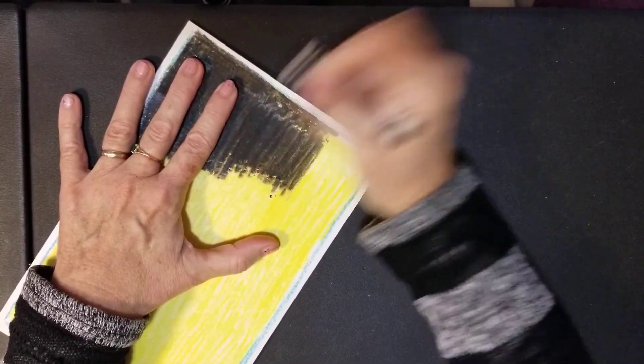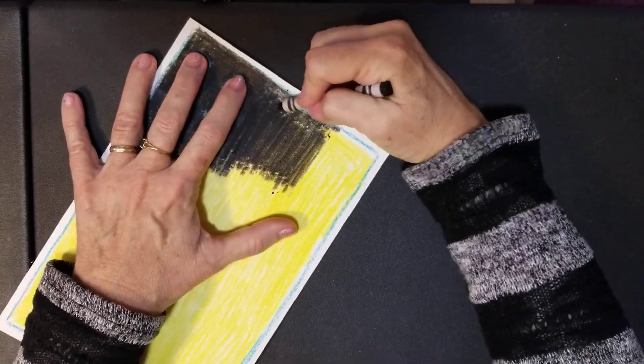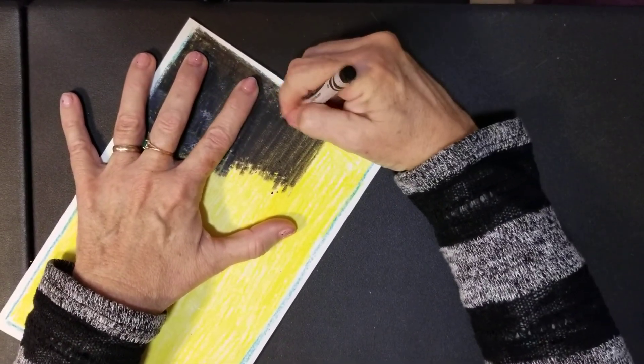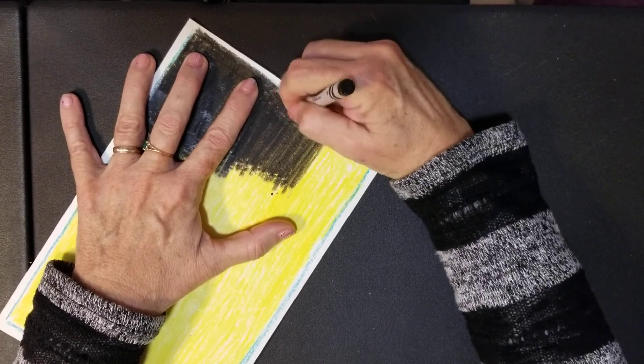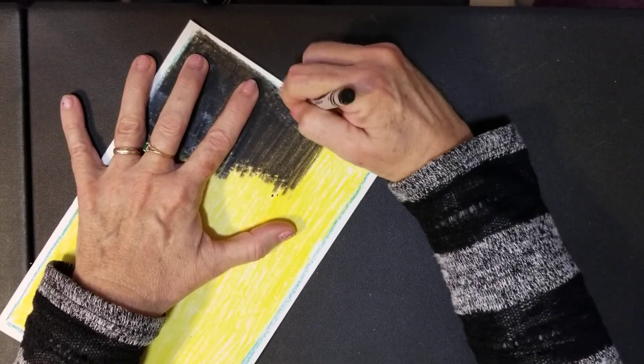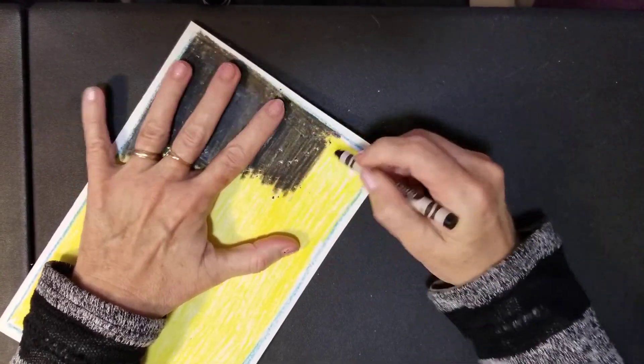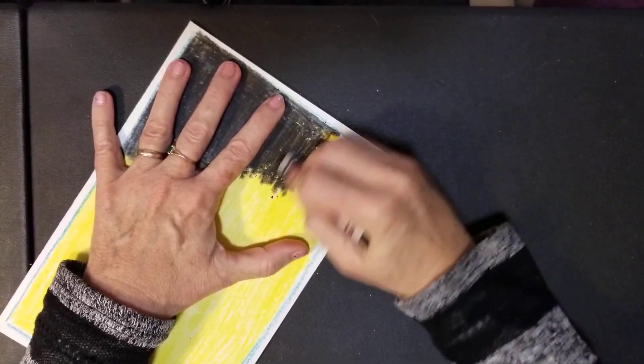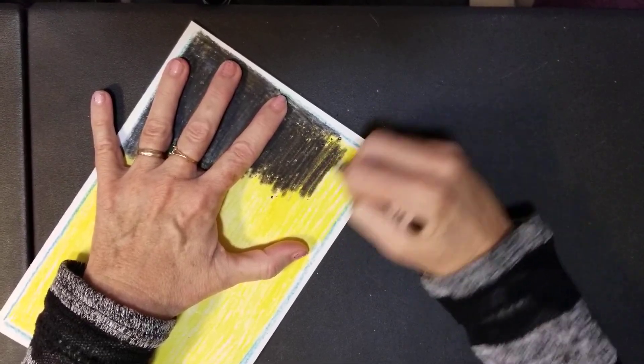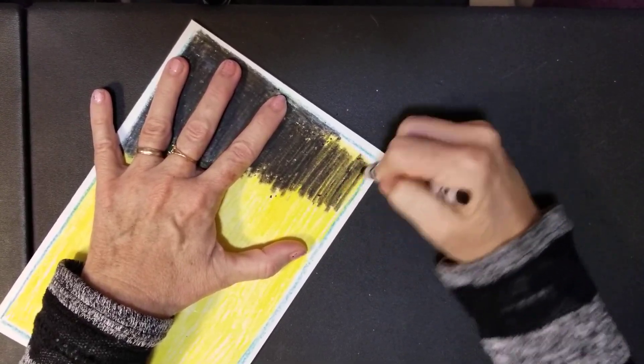You may have to go over a couple times. Sometimes you'll notice it actually takes it off a little, and you'll have to go back over those areas with your black. You can probably hear how hard I'm pressing to cover up the yellow.